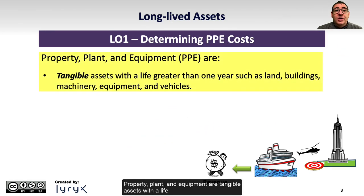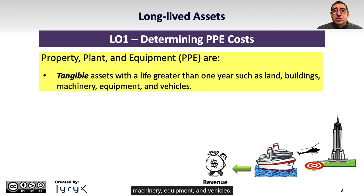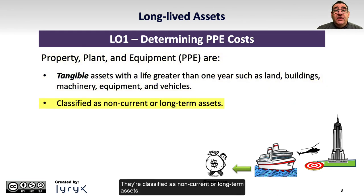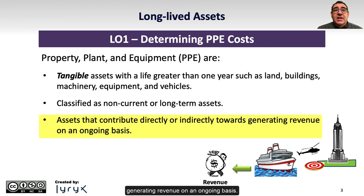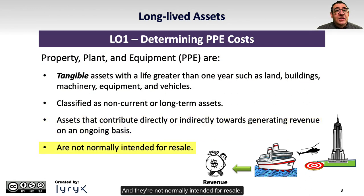Property, plant, and equipment are tangible assets with a life greater than one year, such as land, buildings, machinery, equipment, and vehicles. They're classified as non-current or long-term assets, and these are assets that contribute directly or indirectly towards generating revenue on an ongoing basis. They're not normally intended for resale.